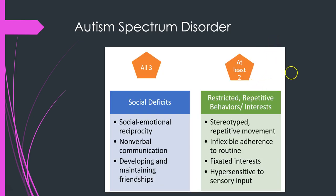For autism spectrum disorder, you need to have all three social deficits: social-emotional reciprocity, nonverbal communication, and developing and maintaining friendships. You also need at least two features in the category of restrictive repetitive behaviors or interests, which could be stereotyped or repetitive movement, inflexible adherence to routine, fixated interests or obsessions about a topic, or being hypersensitive to sensory input.